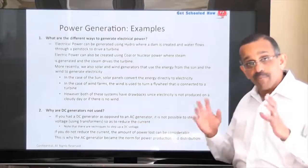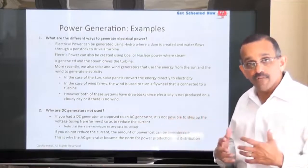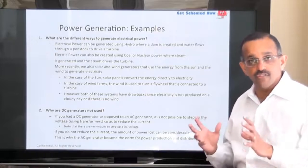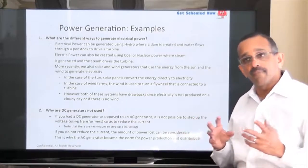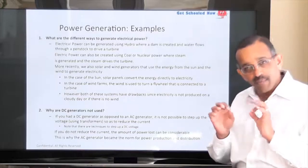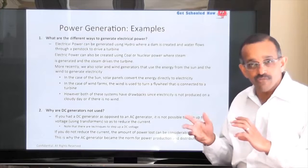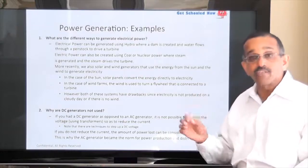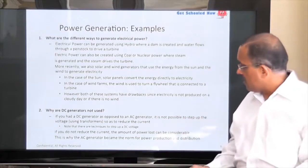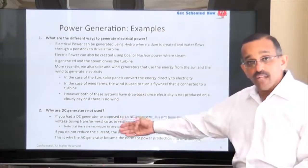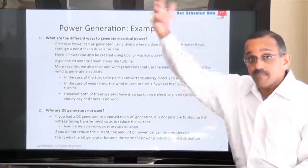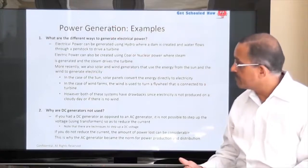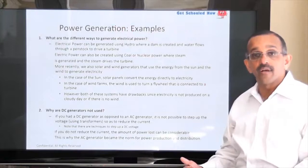Why are DC generators not used? Primarily because it's not easy to step up or step down the voltages. It's not that it's impossible to step up DC voltages — there are techniques to do that. In a nutshell, you transform it through a very complicated method to an AC voltage, use transformers to step it up, and then transform it back into DC voltage. That's one way to do it, but it's not easy. As a result, we use AC generators because when we step up the voltages, we reduce the power lost through transmission lines. And this ends the lesson plan on power generation.